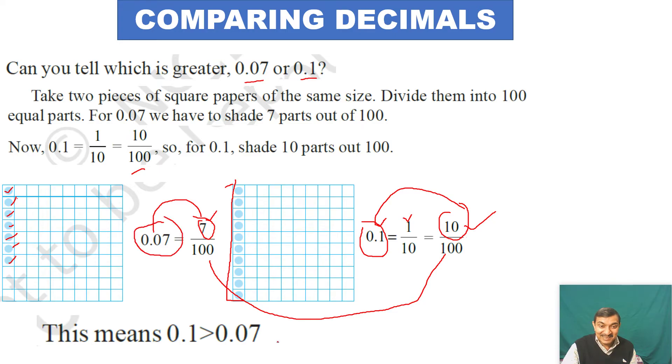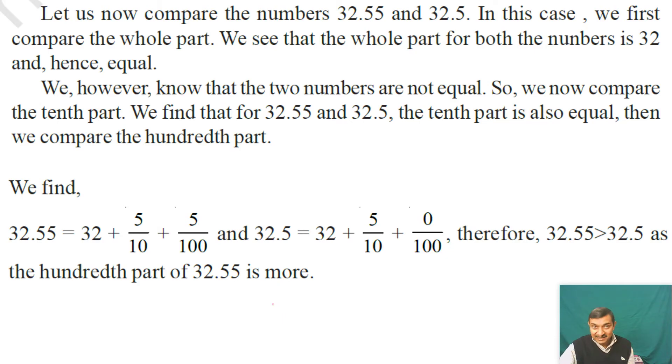Let's now compare the numbers 32.55 and 32.5. In this case, we first compare the whole part. The whole part for both numbers is 32, and hence equal.